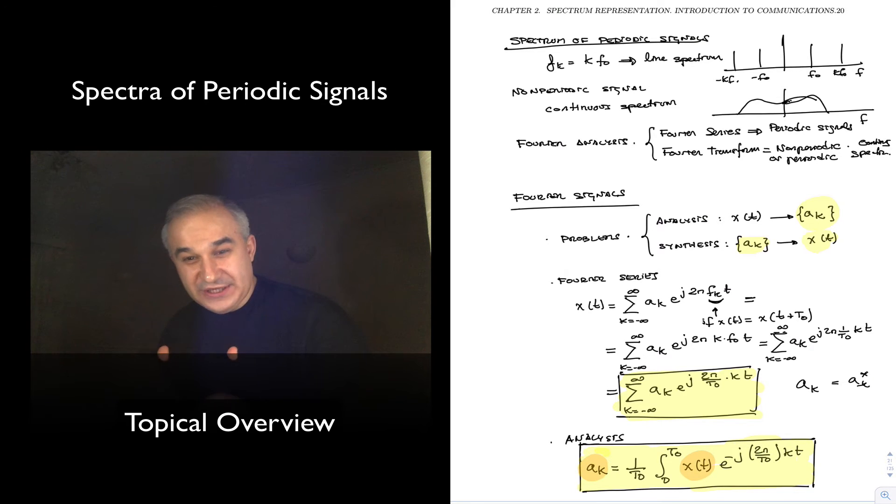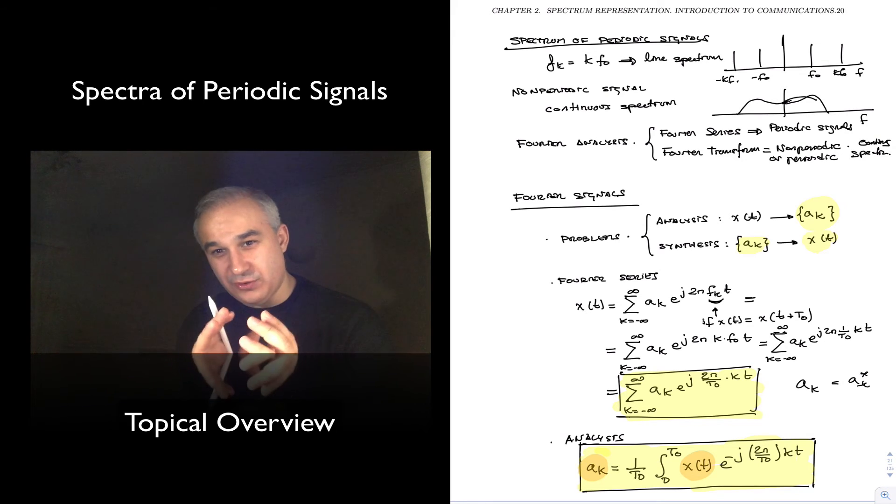Number two: that for periodic signals, you are going to have a line spectrum with harmonically related frequencies and that you do have an ideal mathematical spectrum analyzer for which you put the mathematical equation in and you get the spectrum out.